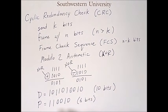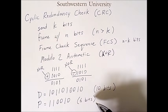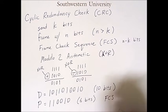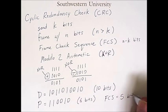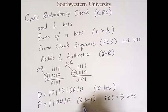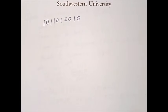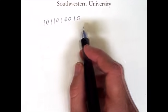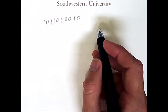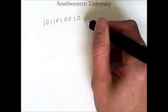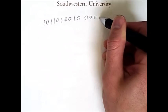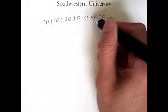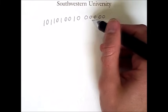The consequence of these choices is that when we create the frame check sequence — the bits appended to the end — it will have a length of 5, which is essentially one bit shorter than the pattern. Here is the data I want to send. We're going to append the frame check sequence to the end, but we first have to compute what it is. The way we'll do this is to append five zeros to the end of the data, and these spots will eventually be filled in by our FCS.